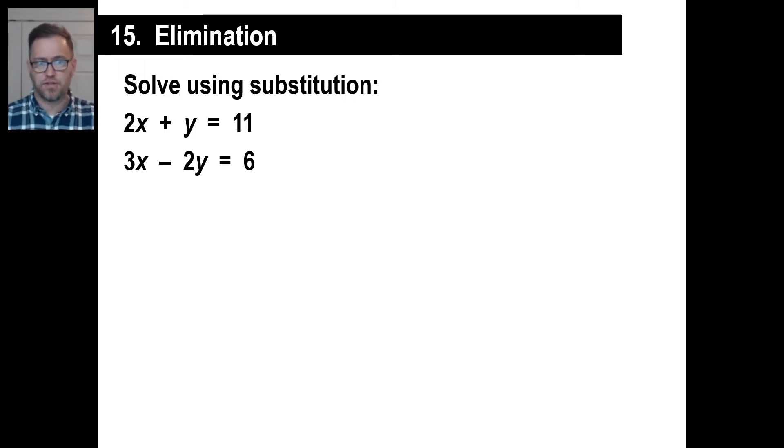Now, a system of equations just means a couple of equations that have a couple of variables each. At some point in the future, we'll be doing like three equations all at once, and all three of the equations will have x's, y's, and z's. That'll be fun.